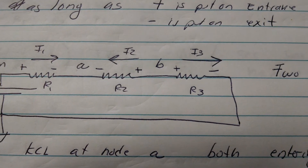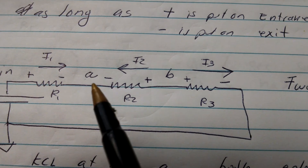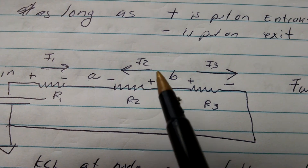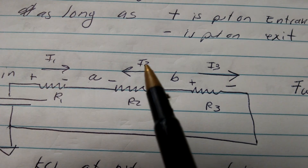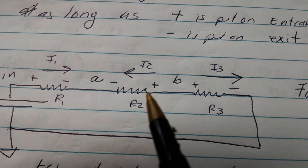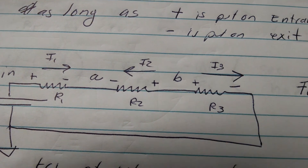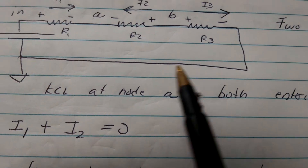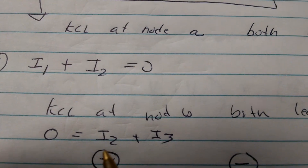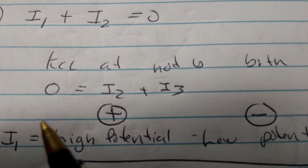Let's do a nodal analysis. This is the reference node; that is the battery, so there are really only two nodes we need to solve for. Normally we would have put the currents all going from left to right, but I decided to flip one. Let's double check: current starts here, ends here — plus, minus. Current starts here, ends there — plus, minus. Starts here, ends there — plus, minus. Let's write the KCL. At node A, both currents are going into the node, so I1 plus I2 equals zero. At node B, both currents are leaving: I2 plus I3 equals zero.